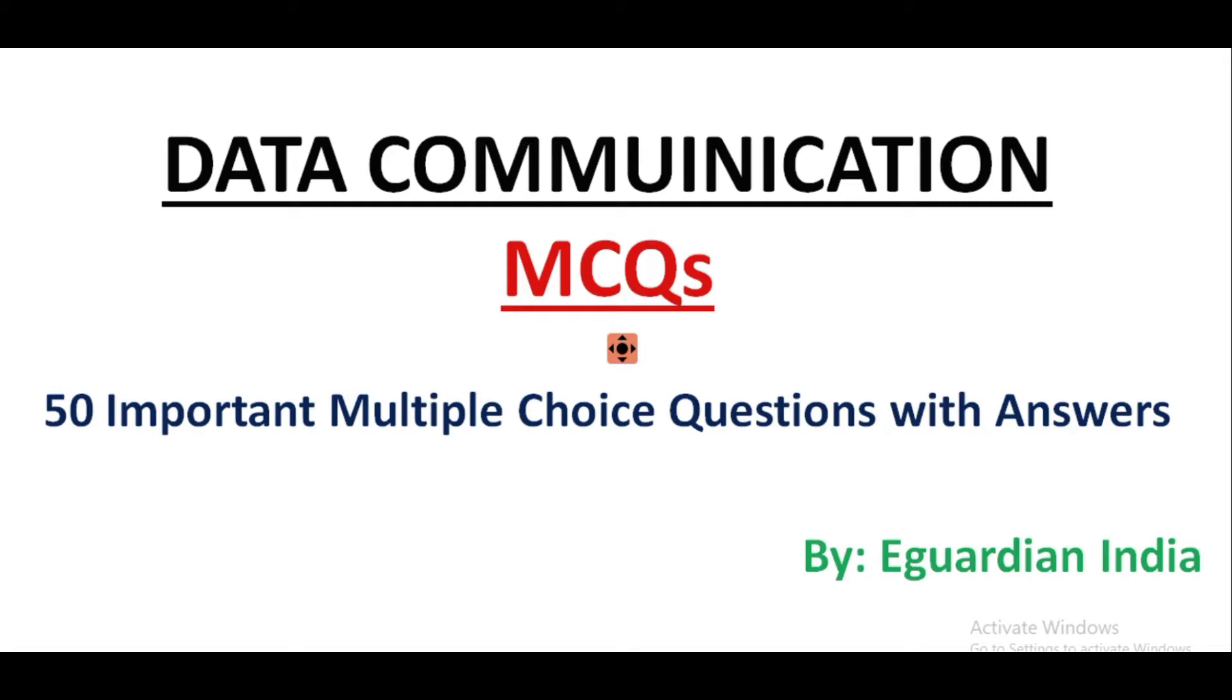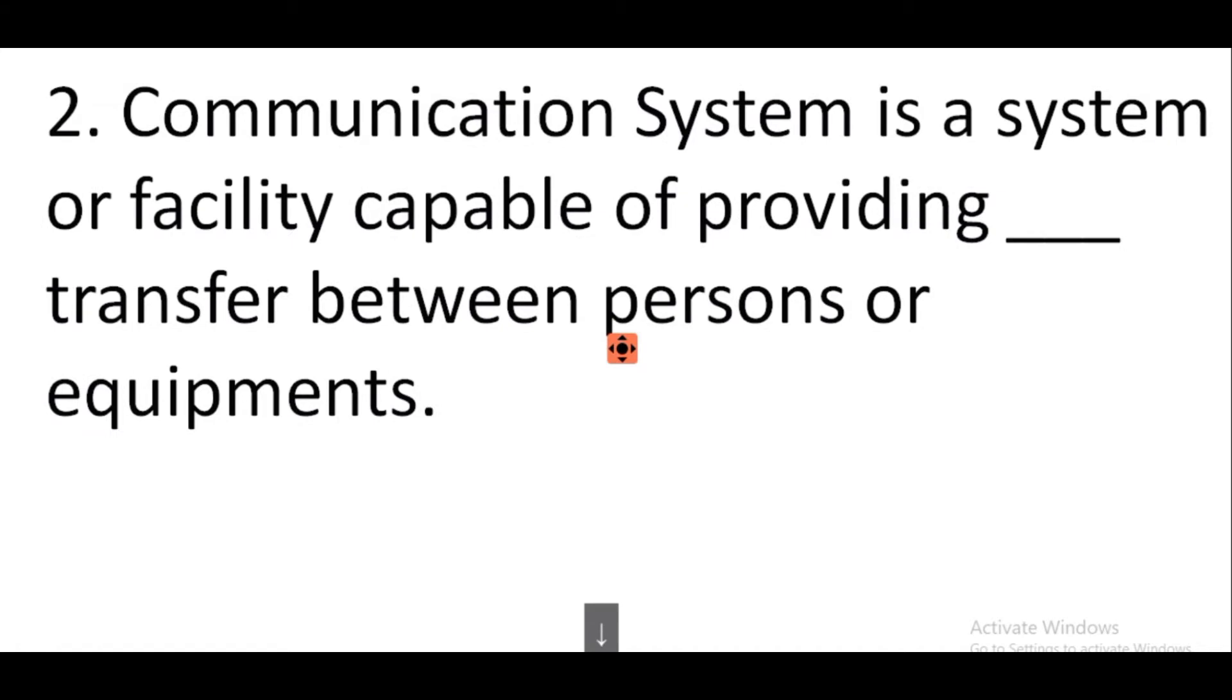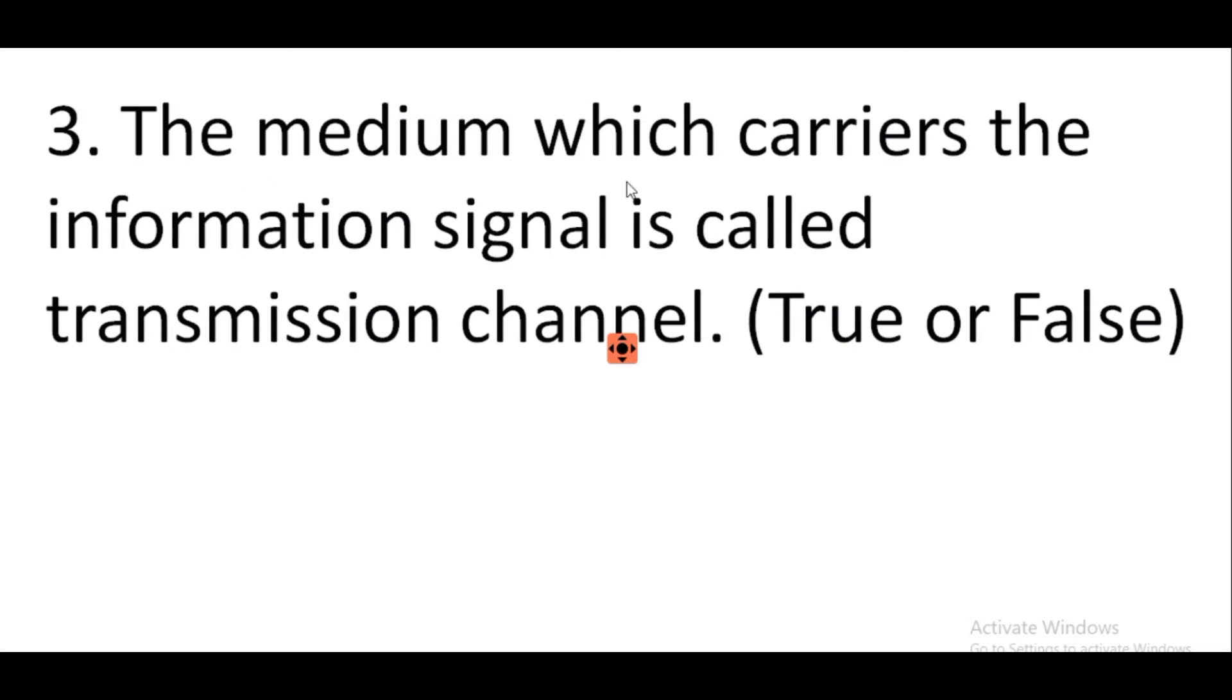Question number 1: Communication is the exchange of ideas, thoughts, and feelings between two persons, places, or points. It is true or false. Answer: True. Question number 2: Communication system is a system or facility capable of providing information transfer between persons or equipment. Answer: Information. Question number 3: The medium which carries the information signal is called transmission channel. True or false?